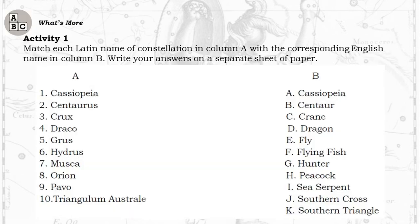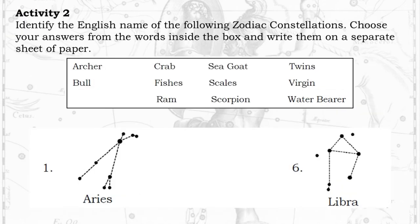Activity 1: Match each Latin name of the constellation in Column A with a corresponding English name in Column B. Write your answers on a separate sheet of paper. Column A: 1. Cassiopeia 2. Centaurus 3. Crux 4. Draco 5. Grus 6. Hydrus 7. Musca 8. Orion 9. Pavo 10. Triangulum Austral. Column B: A. Cassiopeia B. Centaur C. Crane D. Dragon E. Fly F. Flying Fish G. Hunter H. Peacock I. Sea Serpent J. Southern Cross K. Southern Triangle.